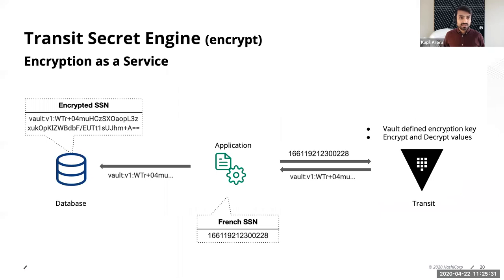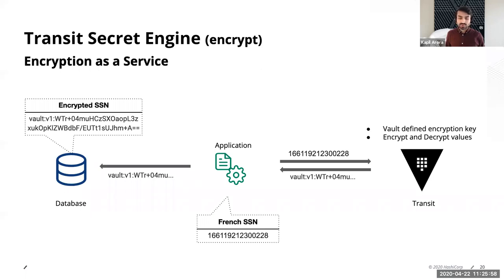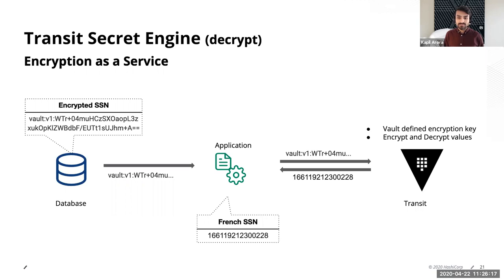Let's start with encryption as a service. In the encrypt workflow, the application receives sensitive information — like an SSN number, in this case a French SSN — sends it to Vault, Vault encrypts the data and sends it back, and this encrypted data is saved into the database. It's very, very simple. For the decrypt workflow, when the application wants to use the data again, it reads from the database, sends it to Vault using the Vault APIs, and receives back the real social security number, which can then be used or sent to another application.